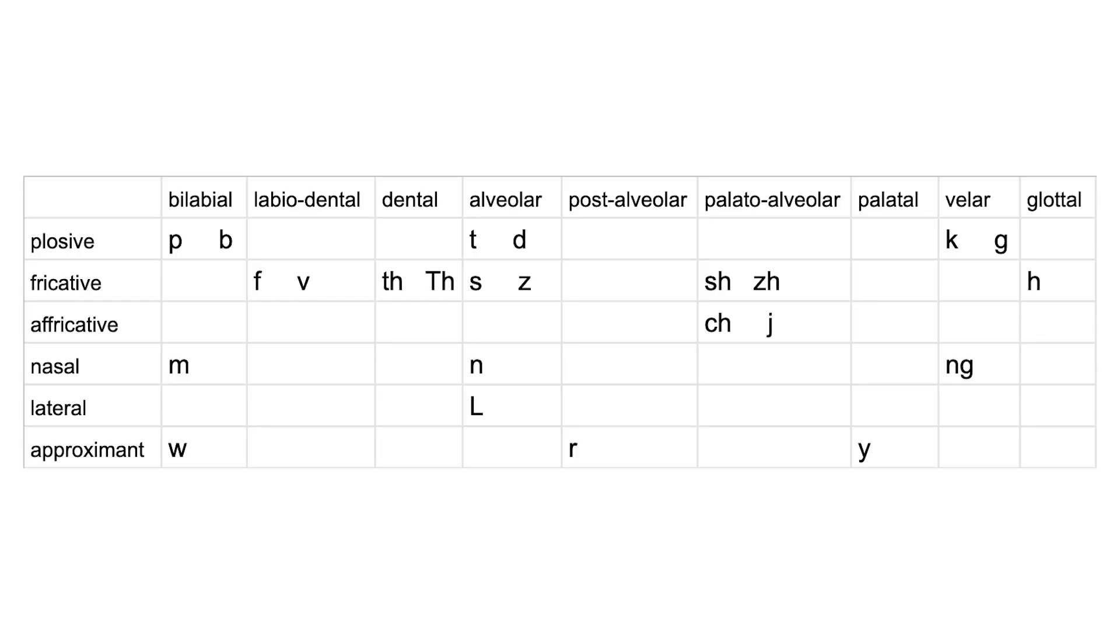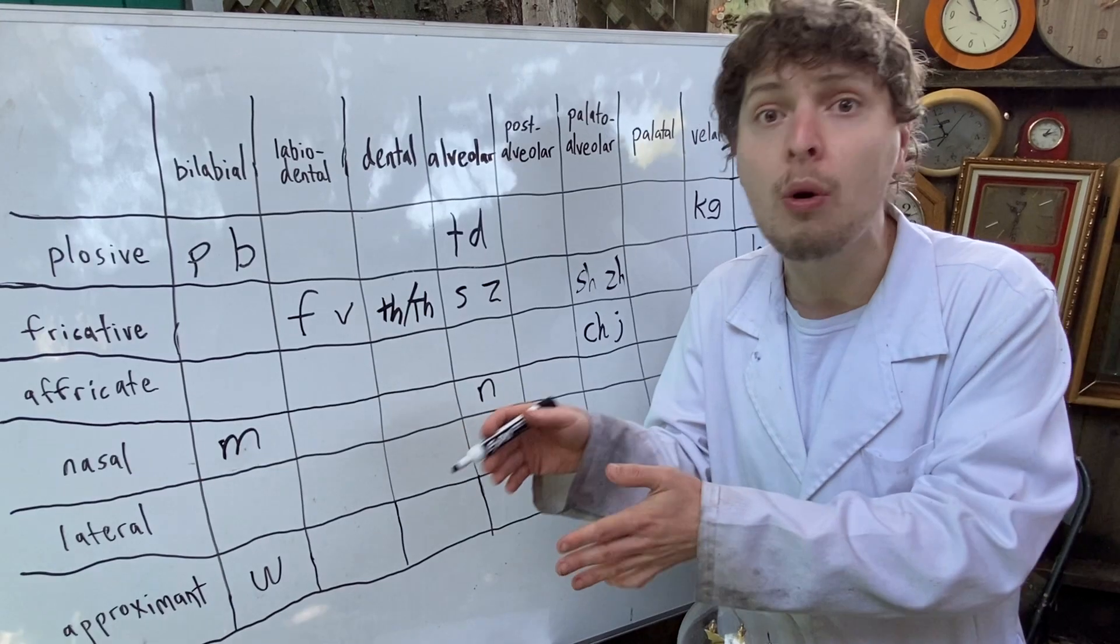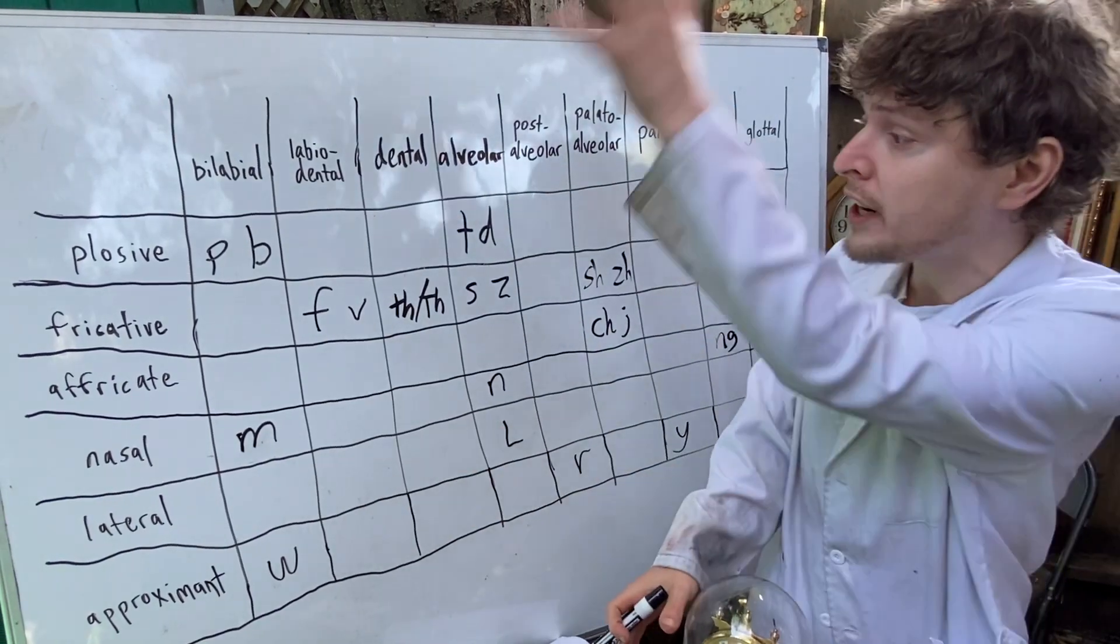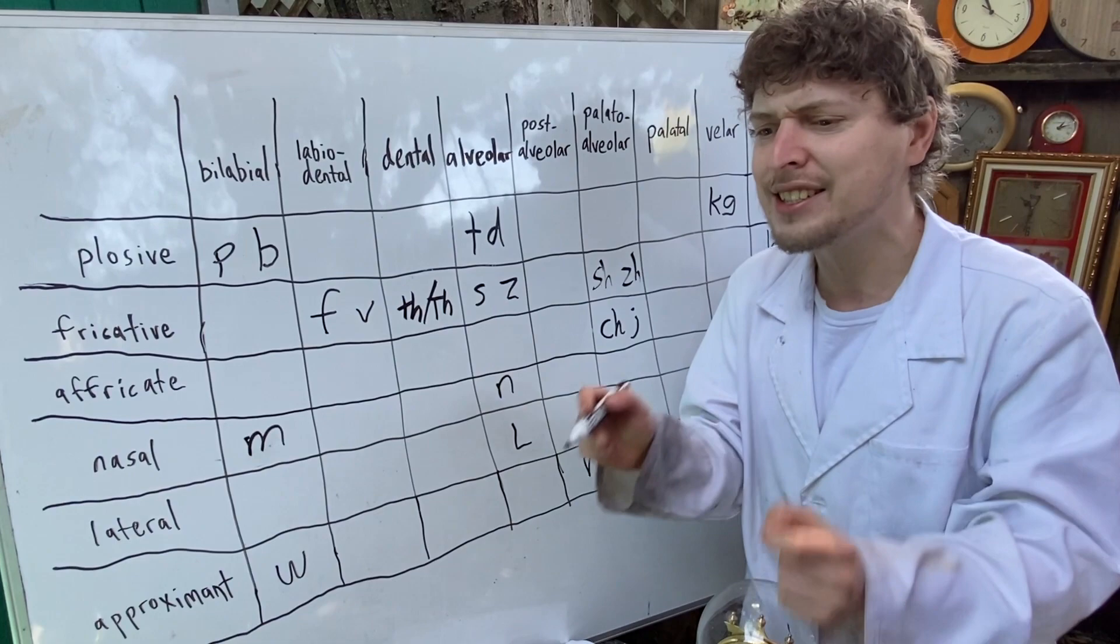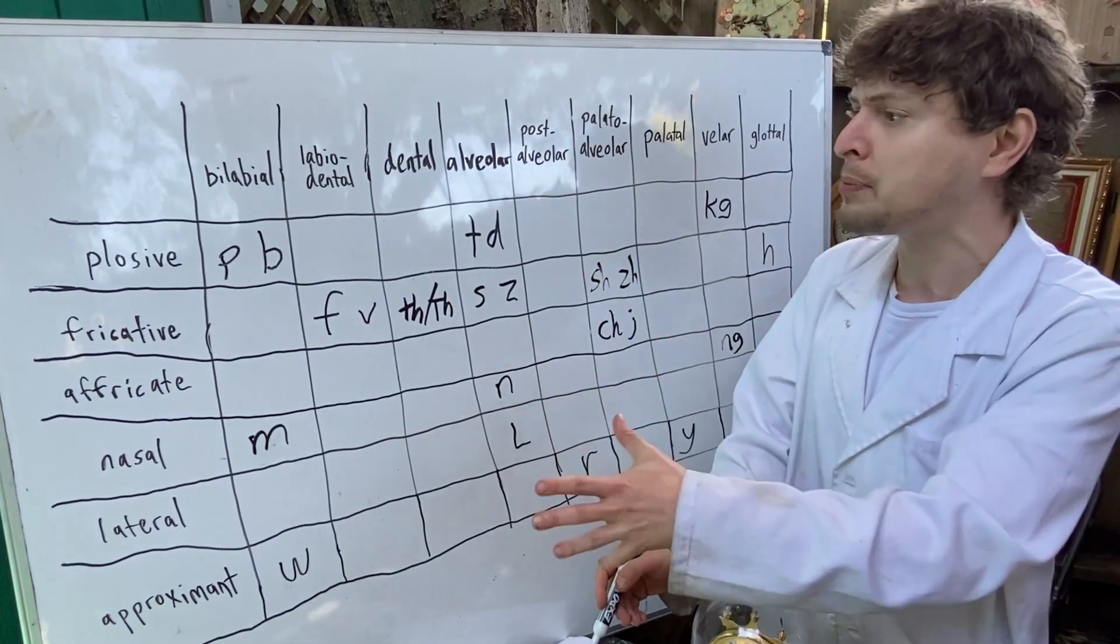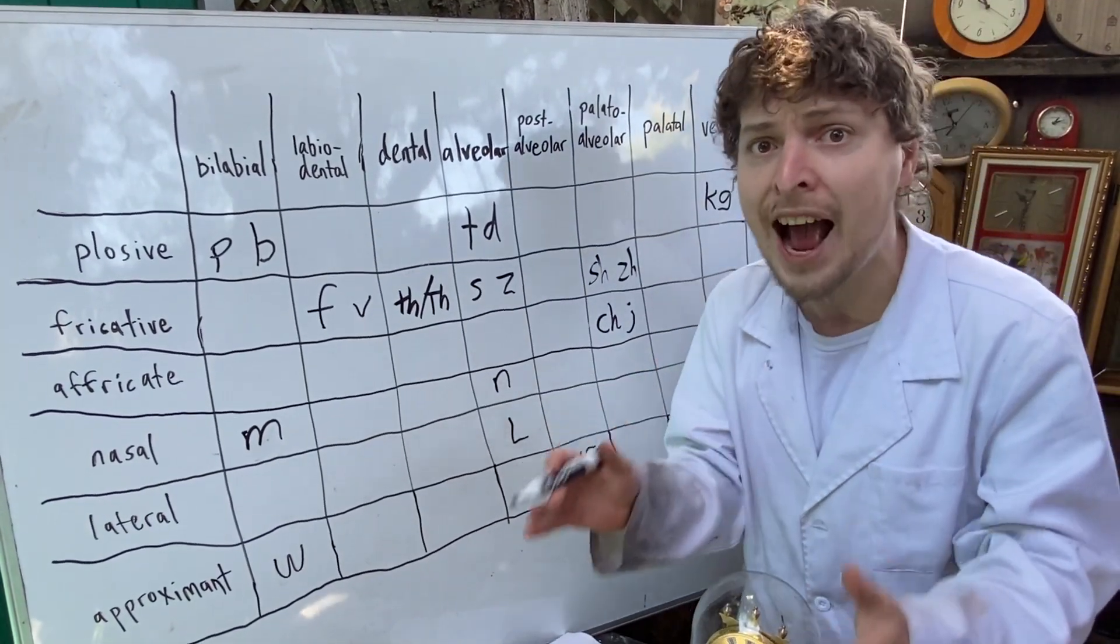So the way we structure our 26 letters, 21 of them are consonants. Three of them, C, X, and Q, are unnecessary because they do not add any phonetic sound here. They just copy others. And the other 18 try and cover this span in a really bad way.